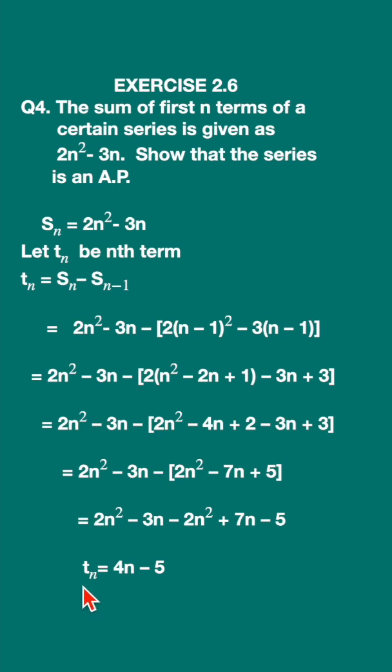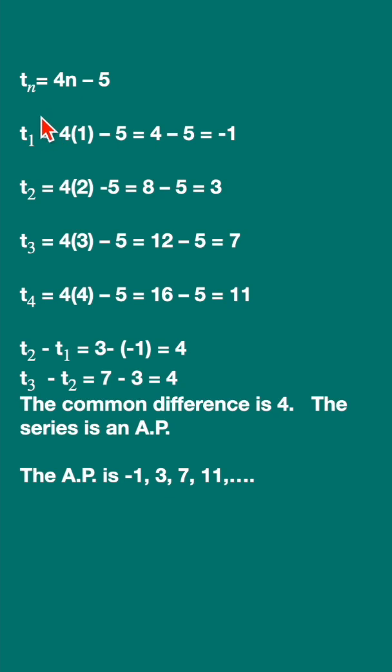So Tn, that is the nth term, is 4n minus 5. You have found out the nth term, let us find out the first term. Put n is equal to 1, substitute. You will get t1, first term is equal to minus 1. Second term is 3. Third term, again substitute n is equal to 3, you will get 7. Fourth term is 11.